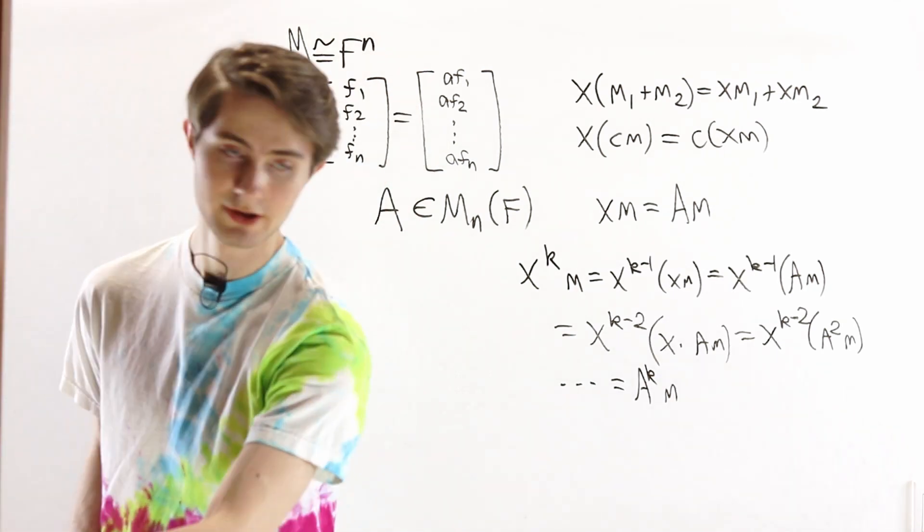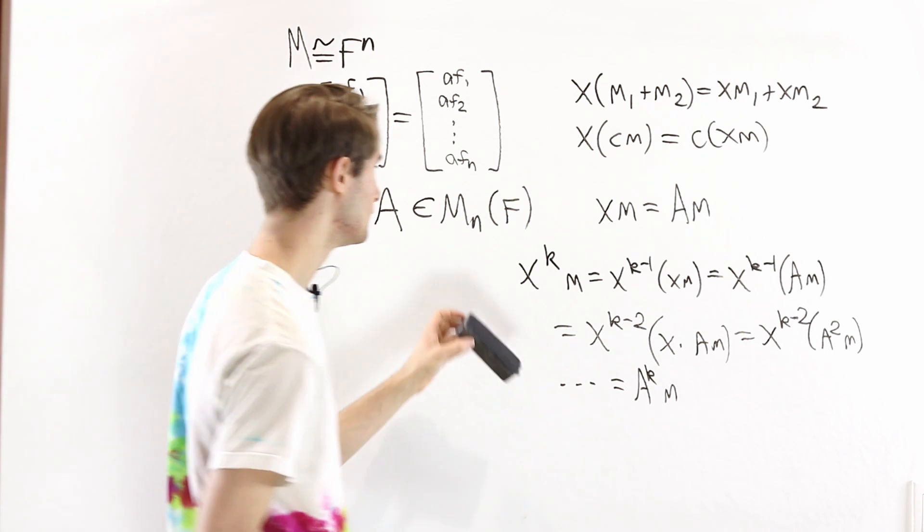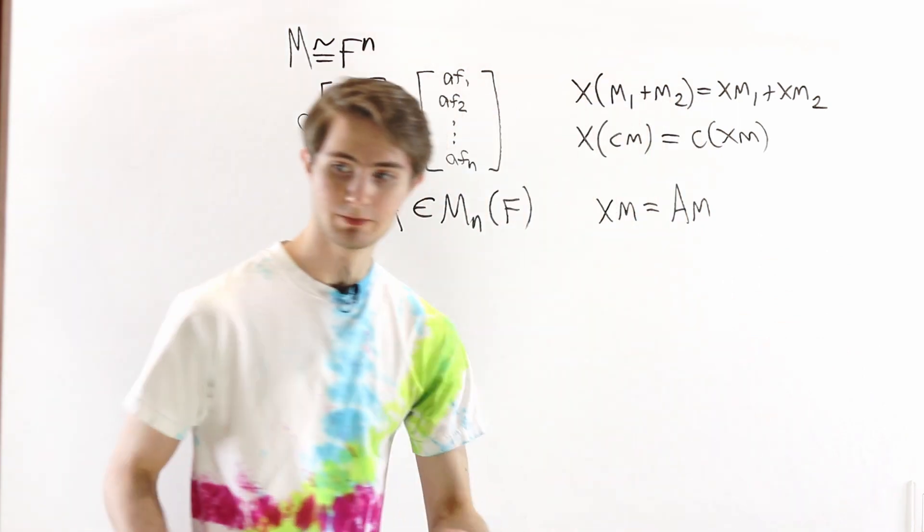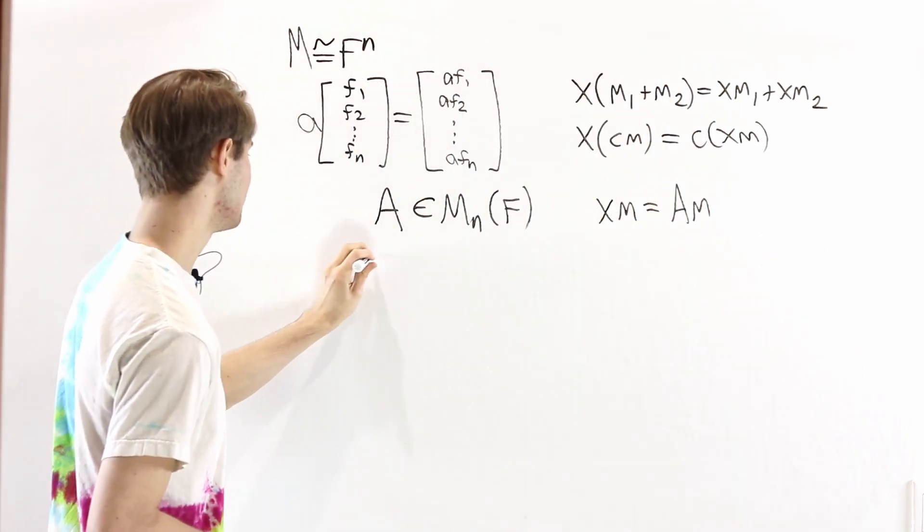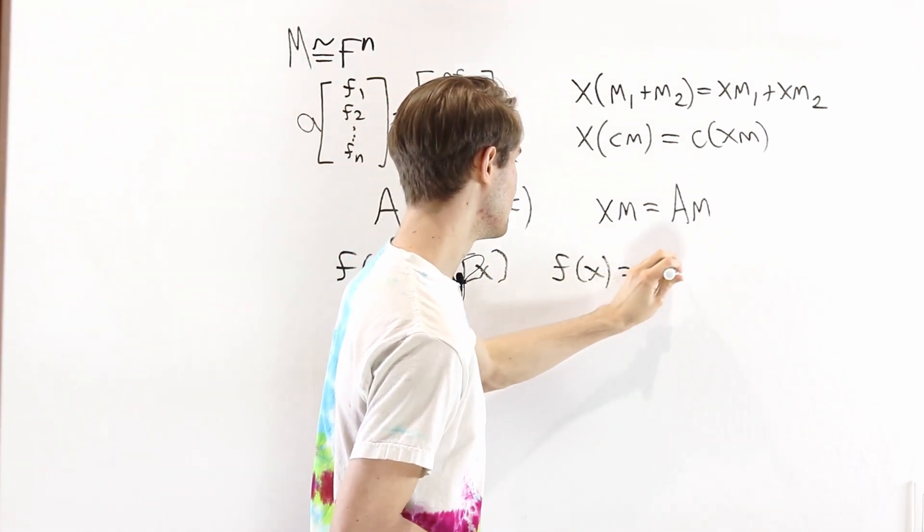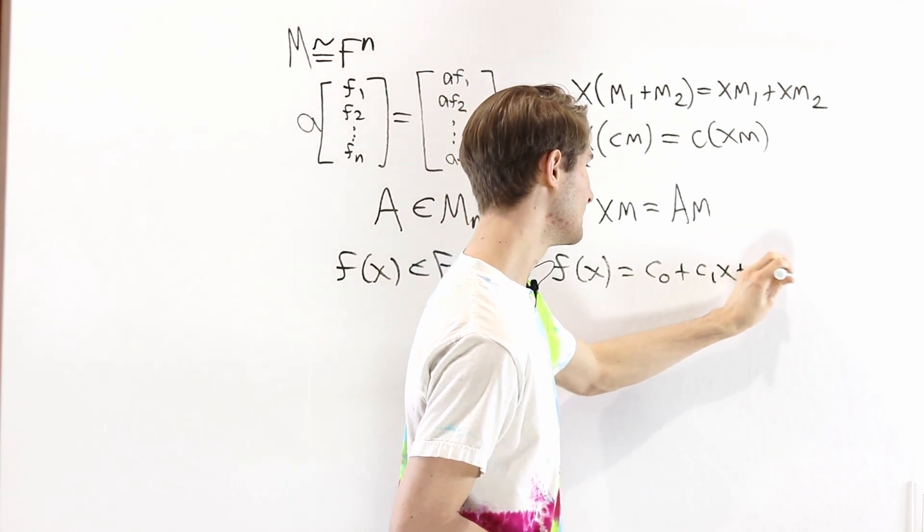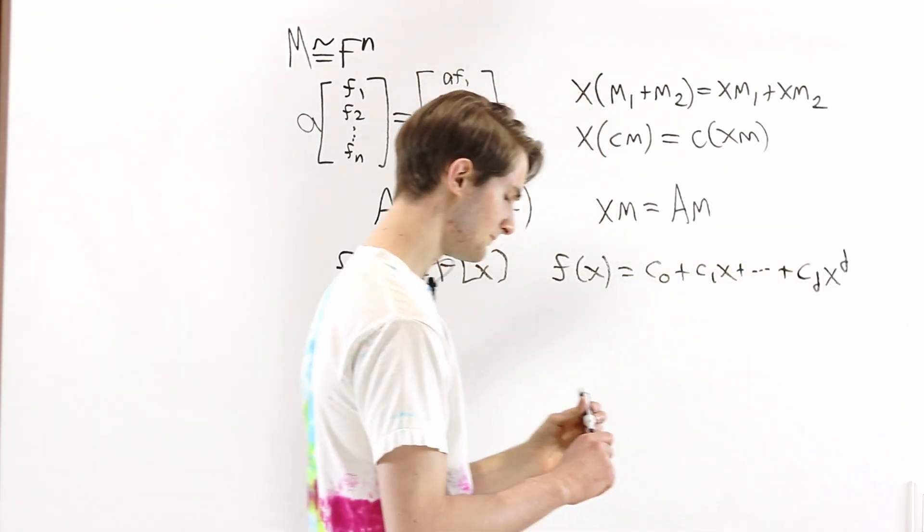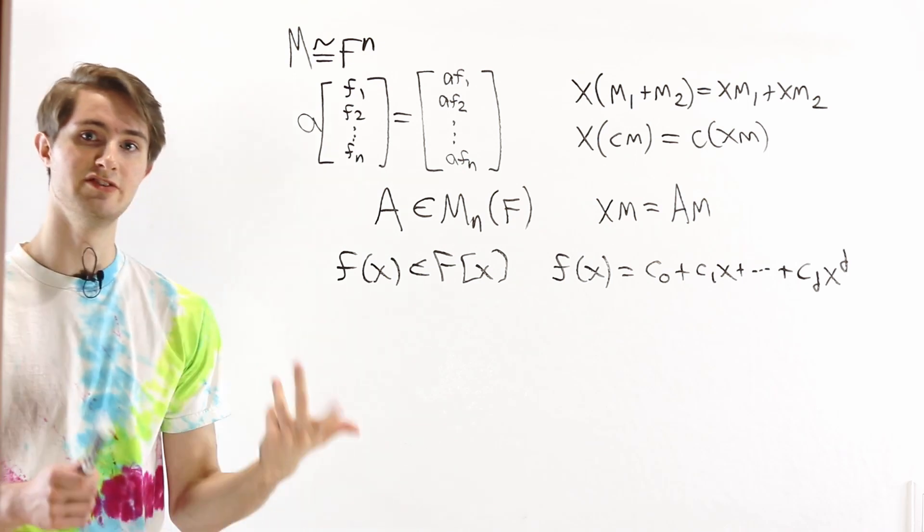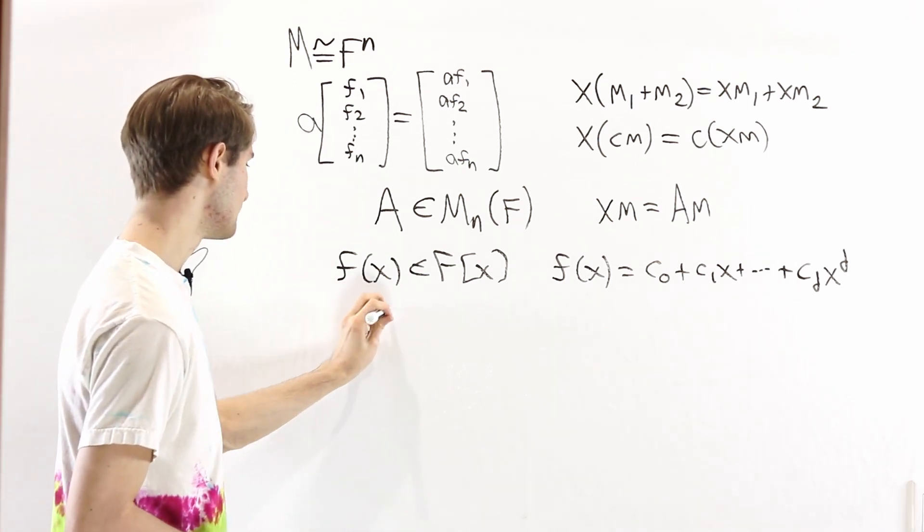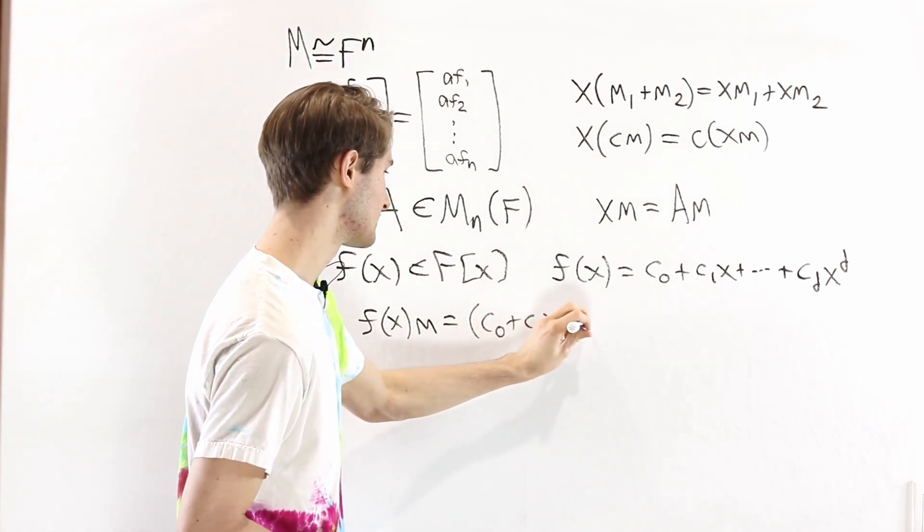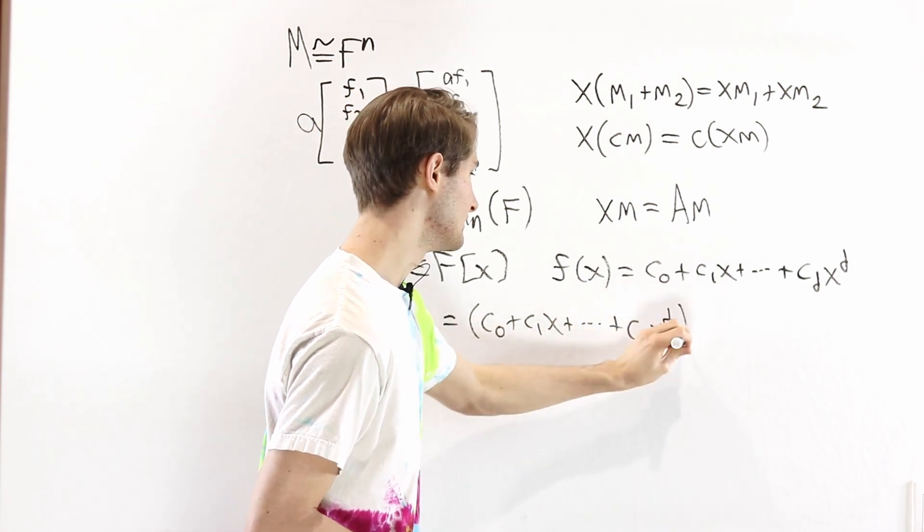So if we look at an arbitrary polynomial, this fact gives us all the information that we need. So let's look at exactly what that looks like. Suppose we have some specific polynomial f of x. And we're going to write f of x as c0 plus c1x plus cdx to the d. And we're going to ask what happens if we take this polynomial and we multiply it onto some vector m. So f of x times m is equal to c0 plus c1x plus cdx to the d times m.